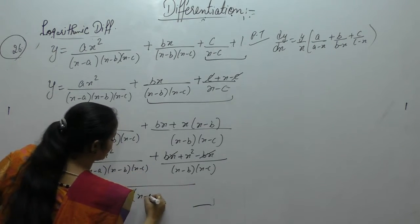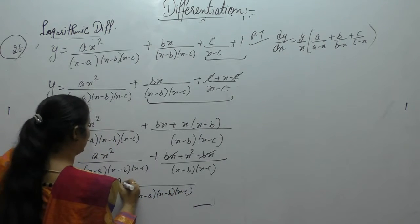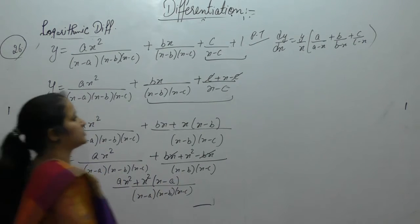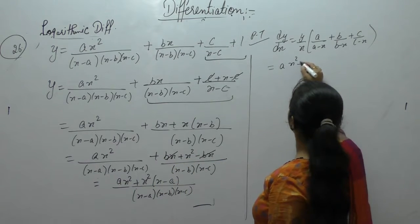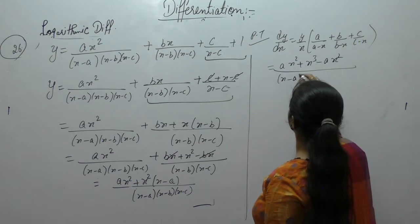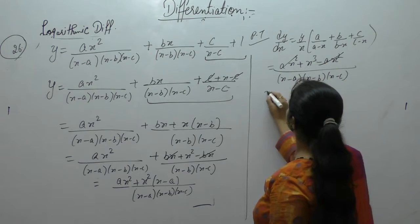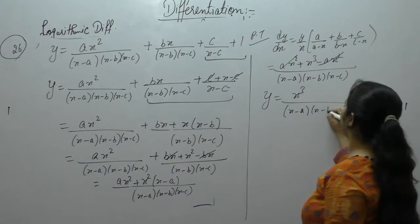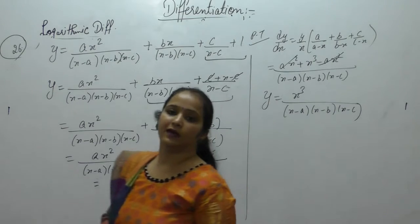Take the LCM as (x-a)(x-b)(x-c). We get ax² + x²·(x-a), so ax² + x³ - ax² over (x-a)(x-b)(x-c). Therefore y = x³/[(x-a)(x-b)(x-c)].